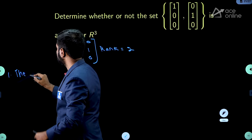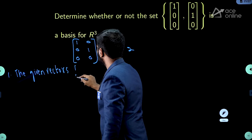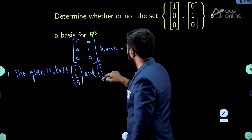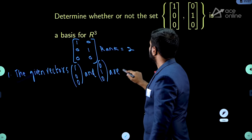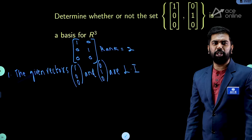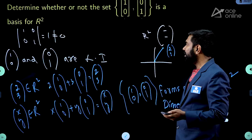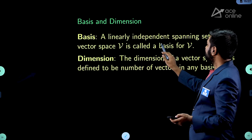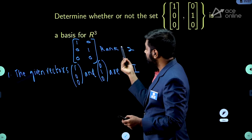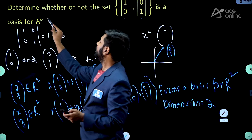The given vectors (1,0,0) and (0,1,0) are linearly independent. But many students come to the conclusion that since they are linearly independent, they form a basis. No! What did we say? A linearly independent spanning set. It has to span. In this question, they are talking about R³.